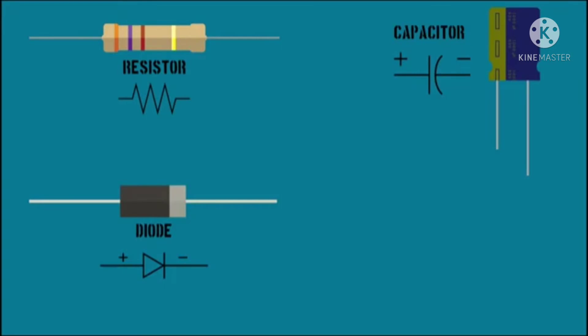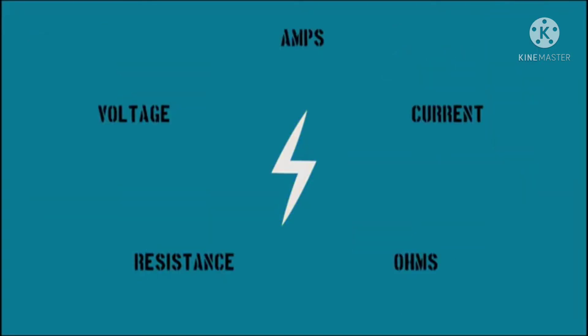The components we will be covering are resistors, capacitors, diodes, and transistors. To understand these components, you need to understand the basic properties of electricity.